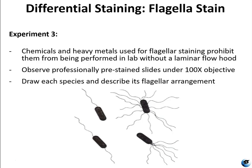For experiment three, you need to know how flagella staining is done. The chemicals and heavy metals used to dilate the flagella — tannic acid and potassium alum — are too dangerous to use in our lab because we don't have a laminar flow hood to protect students. So we're going to observe pre-prepared slides. You will have to go all the way up to 100x in order to see the flagella, and it's still going to be pretty tough because they're still very small.